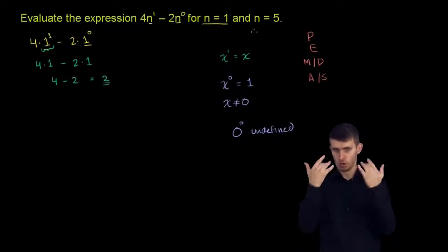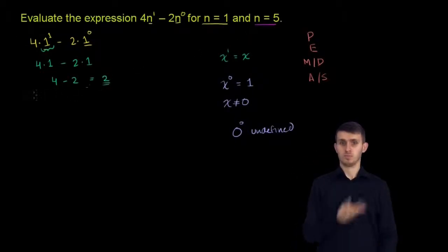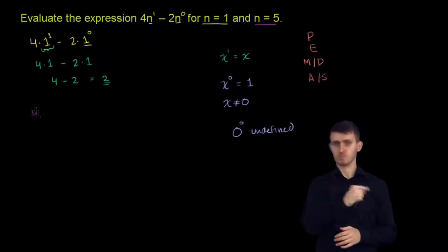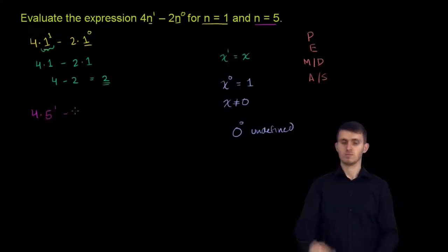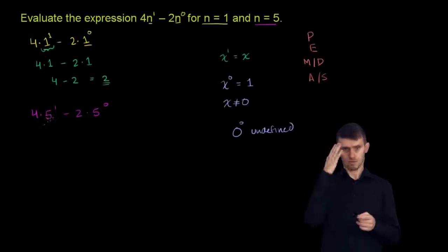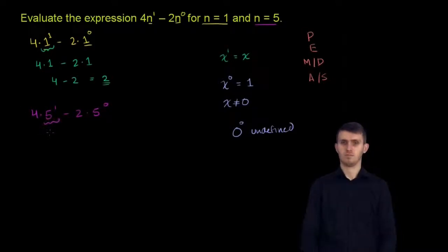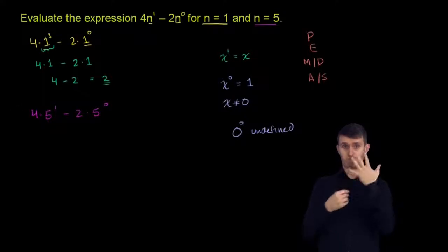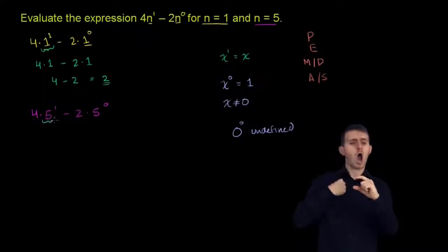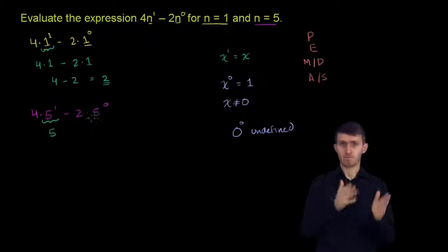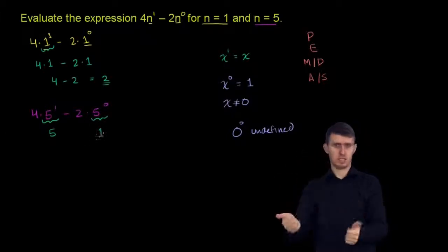Now let's do the same thing with n equals 5. So it becomes 4 times 5 to the 1st power minus 2 times 5 to the 0th power. Same thing—5 to the 1st power is just going to be equal to 5. 5 to the 0th power is just going to be equal to 1.